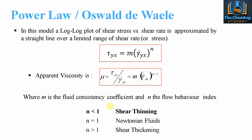For shear thinning fluids, we expect an n value to be less than 1. If we have an n value that equals 1, then what we have is a Newtonian fluid. An n greater than 1 gives us a shear thickening fluid. If n equals 1, the apparent viscosity becomes m multiplied by the shear rate to the power 0, and anything to the power 0 becomes 1. So the apparent viscosity equals the fluid consistency coefficient m — i.e., the ratio of the shear stress to the shear rate — which makes sense for Newtonian fluid behaviour.